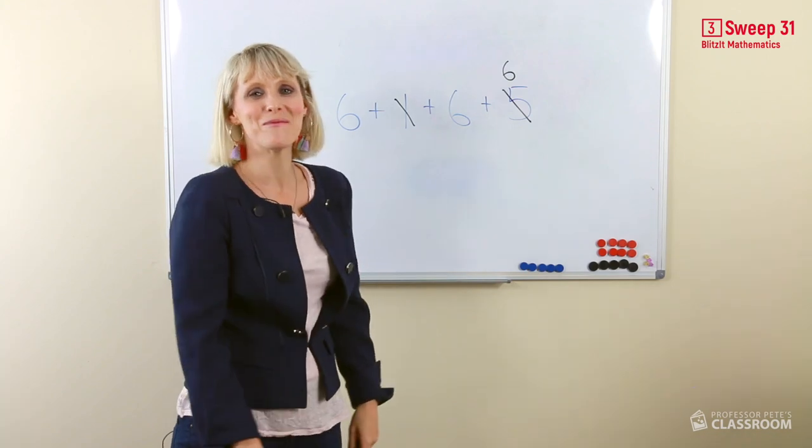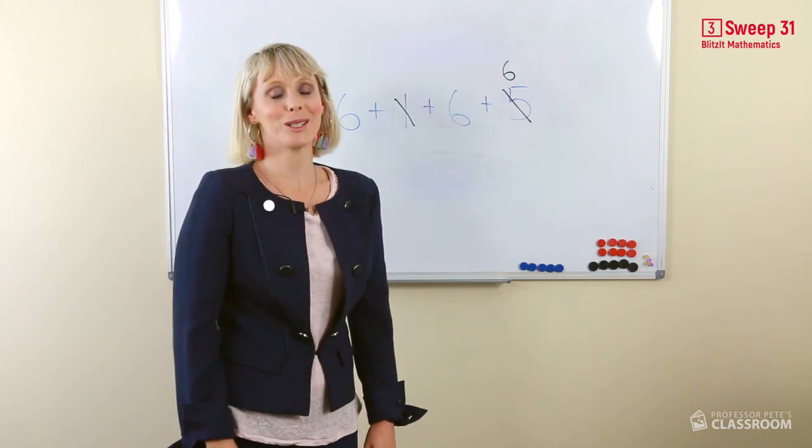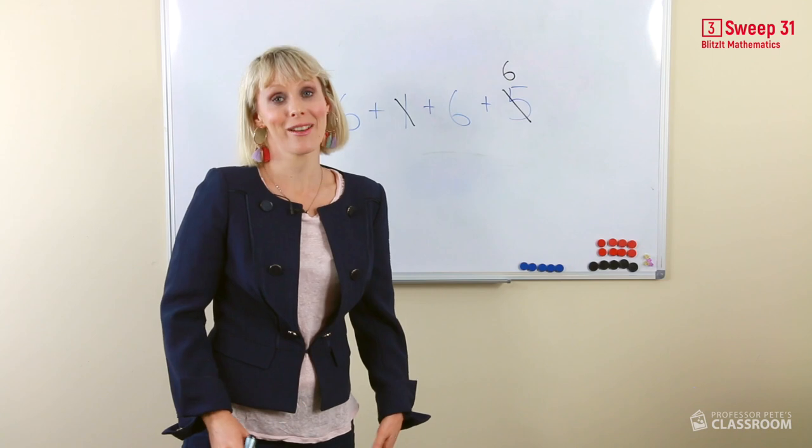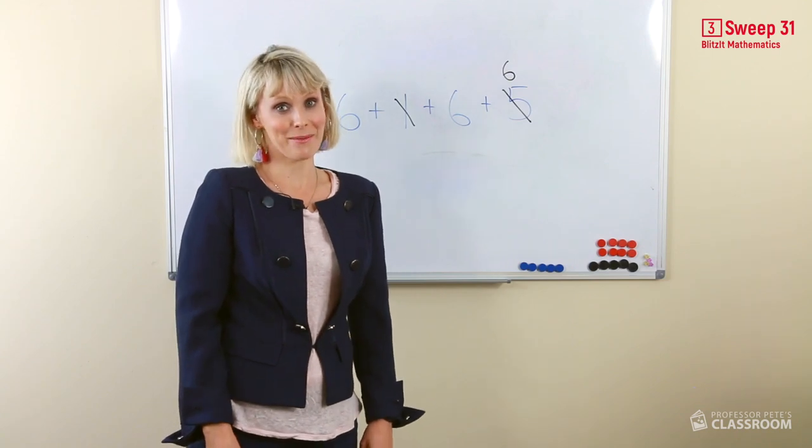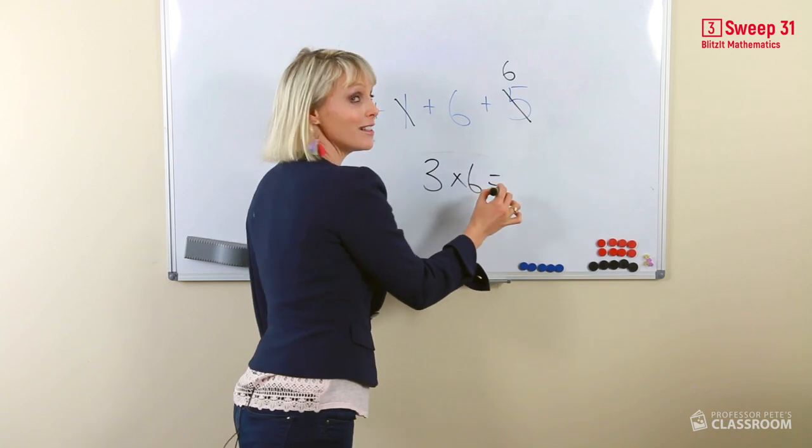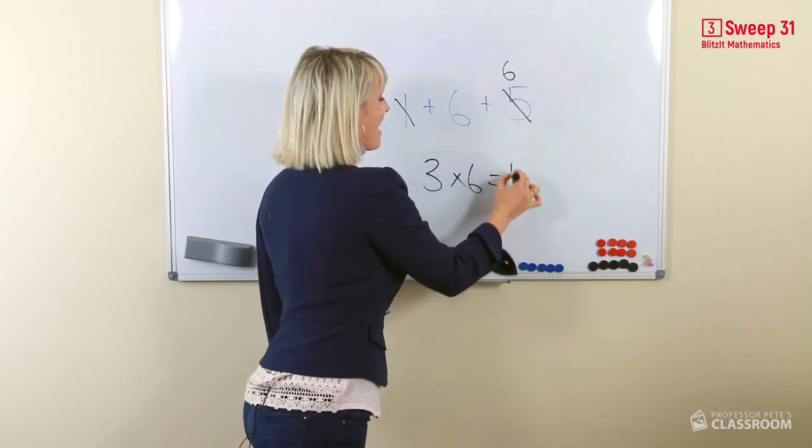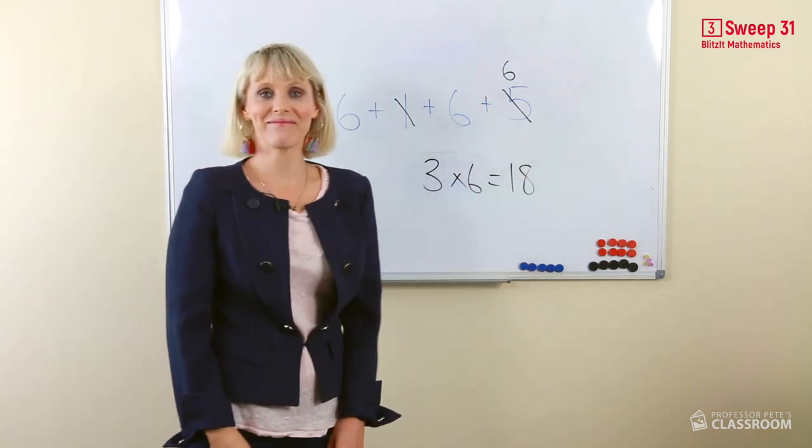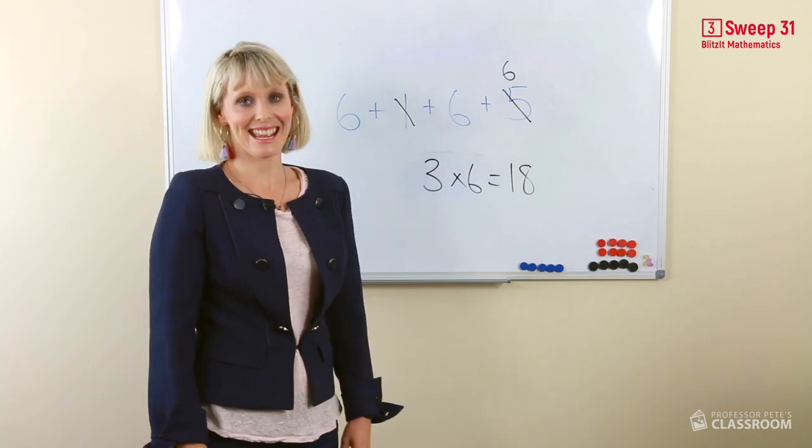I'm not going to add them one by one. That takes too long, especially when we have done our multiplication tables. We know that three groups of six equals, that's right, 18. The answer is 18.